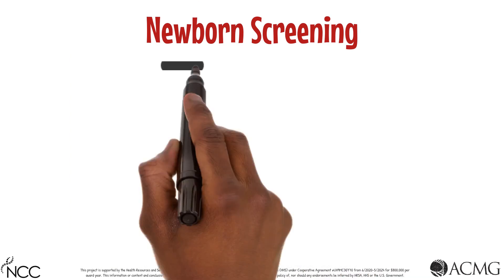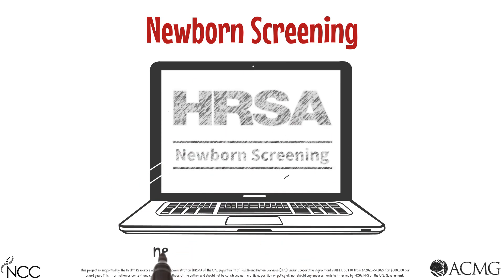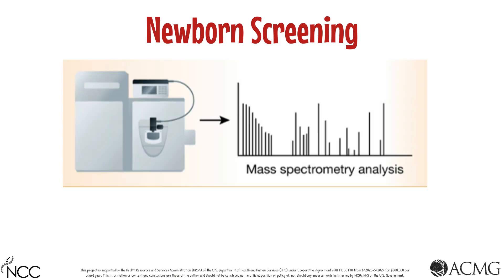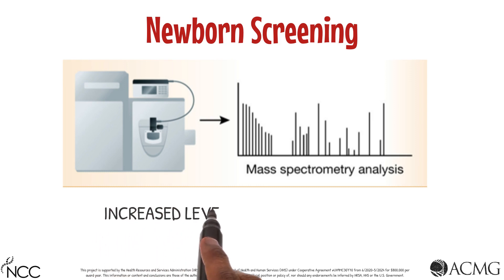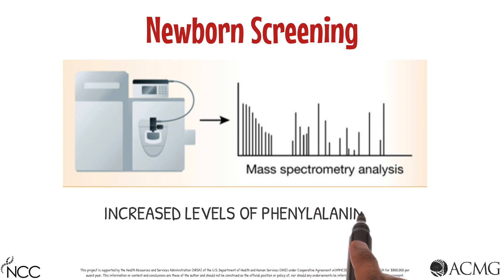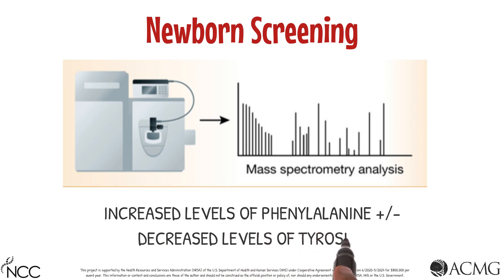All states in the United States provide newborn screening for PAH deficiency. A good resource for checking a state's newborn screening panel is the newbornscreening.hrsa.gov website. Screening for PAH deficiency is performed by examining levels of the amino acid phenylalanine, which is elevated in individuals with PAH deficiency. Programs may also look at levels of the amino acid tyrosine, which can be decreased in individuals with PAH deficiency.